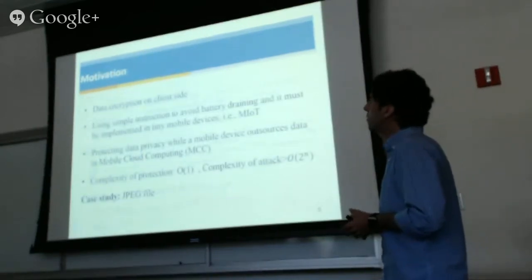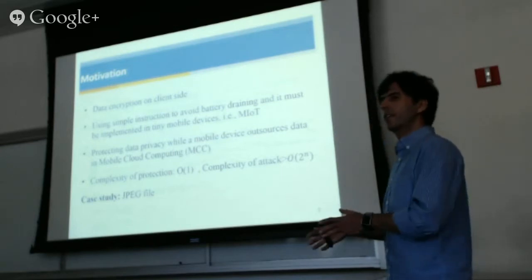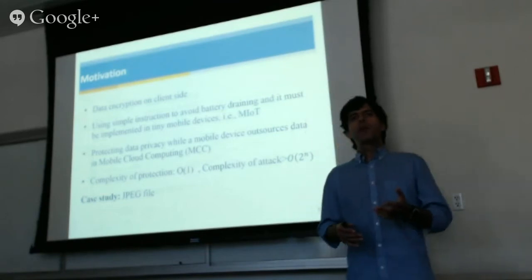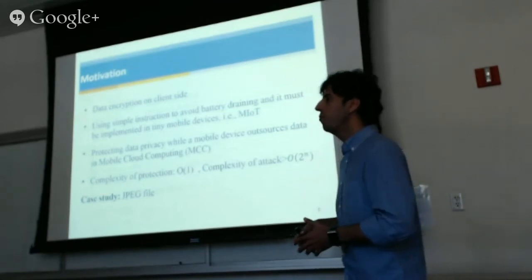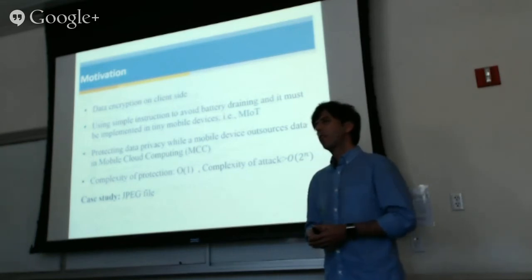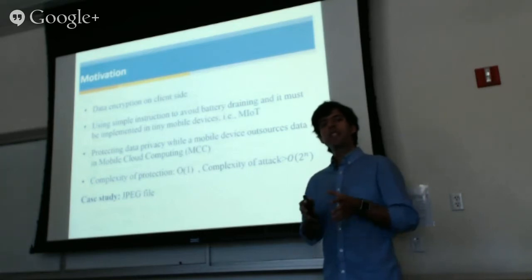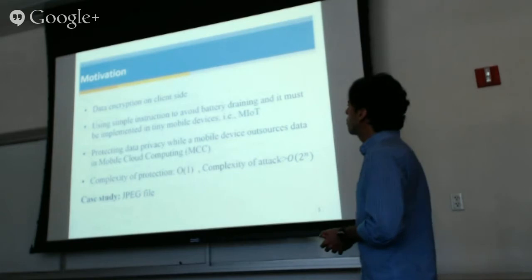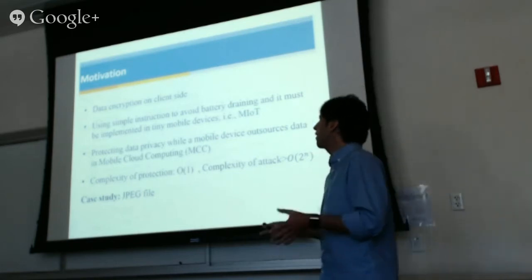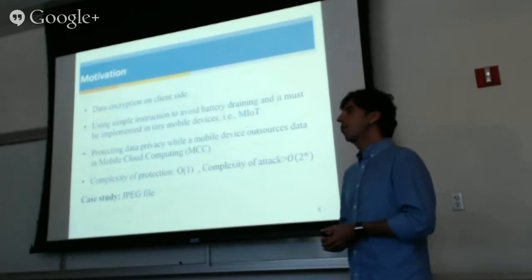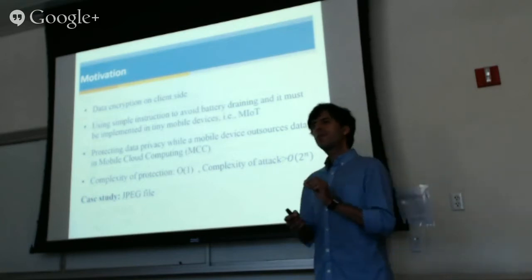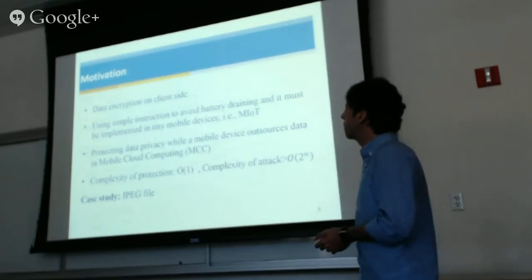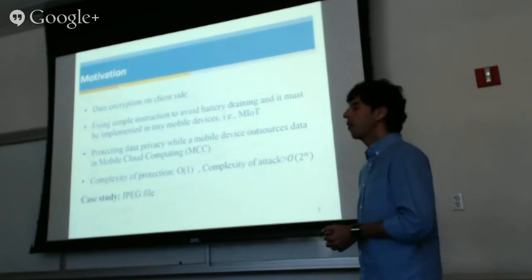This is our motivation for the study. We want to have data encryption on the client's side. Why? Because when we share our data with a cloud vendor, the cloud vendor has minimum access to your data. So to maintain data privacy, you have to encrypt on the client's side — meaning on mobile devices — using simple instructions to avoid battery draining. It must be implemented on tiny mobile devices such as MIoT or mobile Internet of Things. We also want to protect our data privacy when using mobile cloud computing, or MCC.